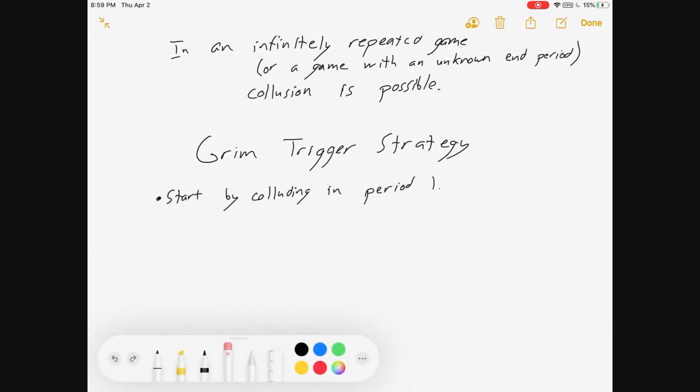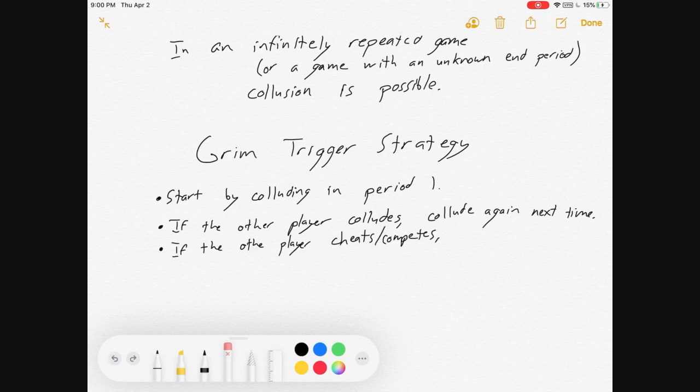So here it is, the grim trigger strategy. And the strategy is this. You start by colluding in period one. If the other player colludes, collude again next time. If they betray you, then you're going to play Cournot until the end of time. So start by colluding. If they collude, respond with more colluding. And if not, compete forever more. That grim trigger strategy can be a Nash equilibrium.